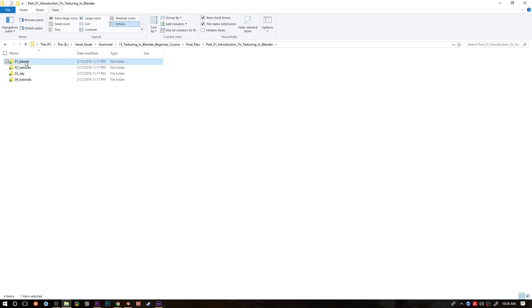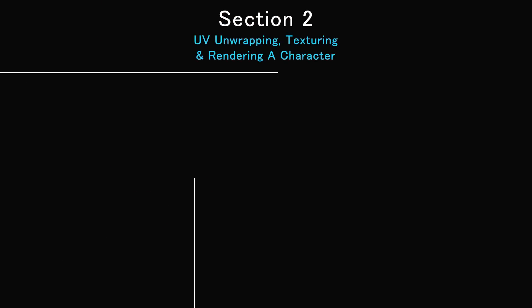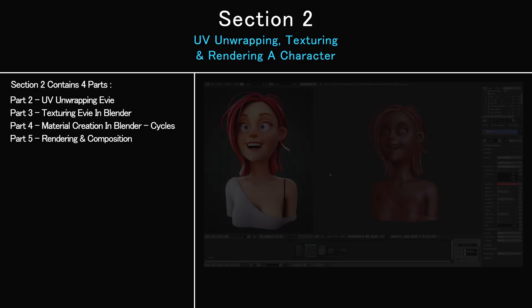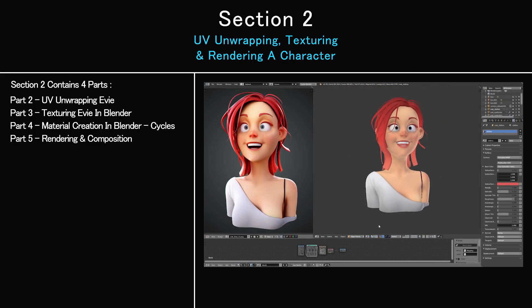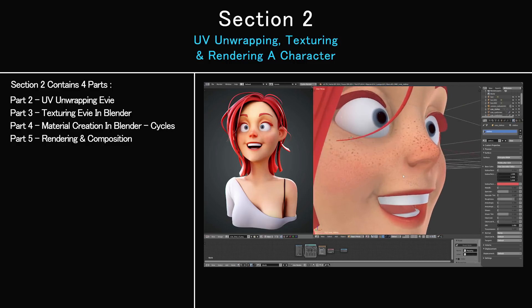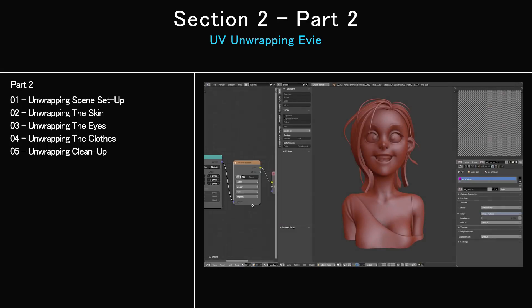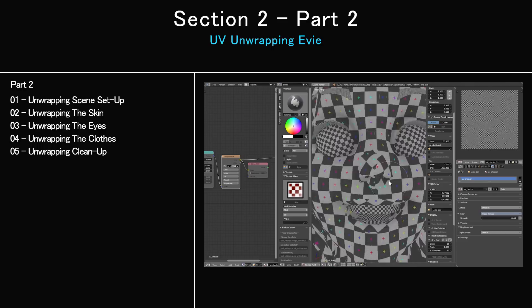You will also get the scene files of Vivi used for Part 1. The second section covers texturing and rendering the character Eevee from start to finish, split into Parts 2, 3, 4, and 5. This section comes with appropriate scene files including the blend files of Eevee and two custom skin alpha textures. Part 2 is a 5-part video showing my workflow on UV unwrapping a character without the hassle of retopology, which will help speed up your process by quite a lot.